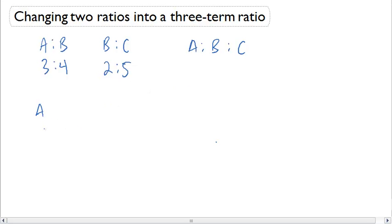Let's start off with what we know. We know that if I have A and B, it's in a ratio of 3 to 4. I also know that I have B and C in a ratio of 2 to 5. In order to be able to write this as one ratio, I need to have B be the same term in both of my ratios.